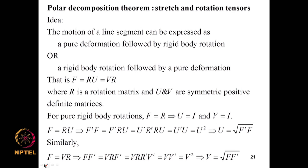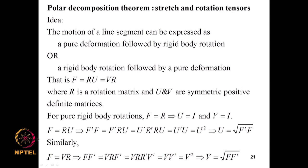There is an important concept known as the polar decomposition theorem, which leads to the notions of stretch and rotation tensors. The key idea: the motion of a line segment can be expressed as a pure deformation followed by a rigid body rotation, or a rotation followed by a pure deformation — that is F = RU or F = VR, where R is a rotation matrix and U, V are symmetric positive definite matrices. For pure rigid body rotations, F = R and U = V = I.